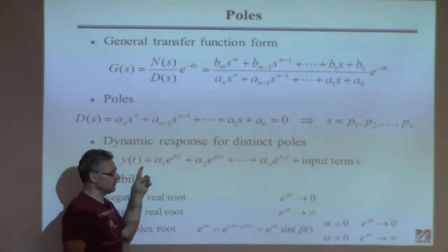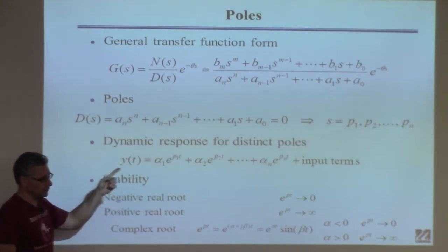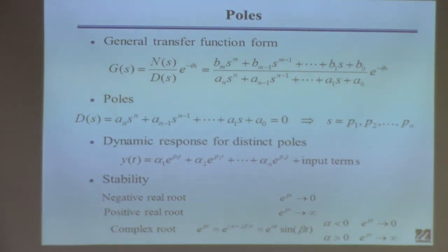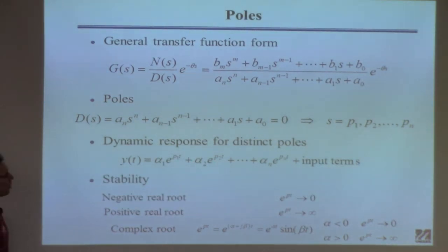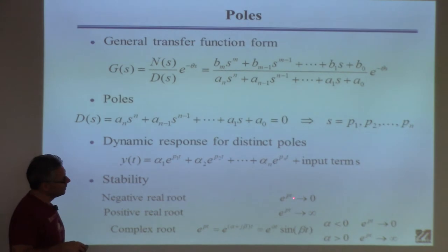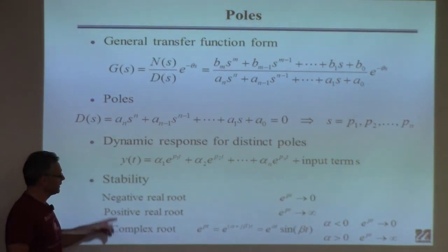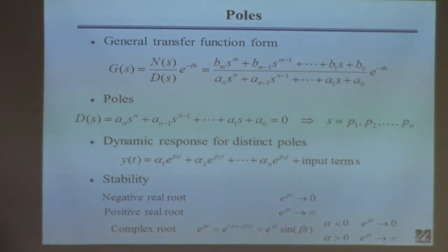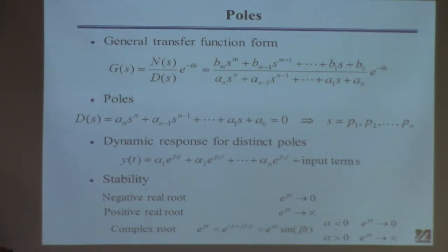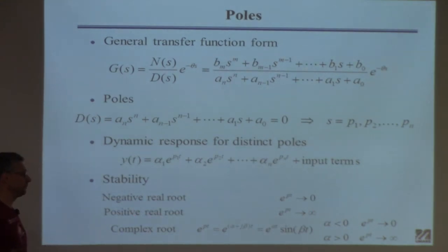I don't know what the alphas are, because to find them you have to actually do the partial fraction expansion, which I don't want to do. So I'm interested in the qualitative response. For a given pole P — let's say it's negative and real — that means this term will decay to zero. If P is minus two, as time increases, that term will go to zero. On the other hand, if it's real but positive, then this term is going to blow up. If instead of being a real number it's a complex number, we can write the pole in the form alpha plus j·beta, where alpha is the real part and beta is the imaginary part.